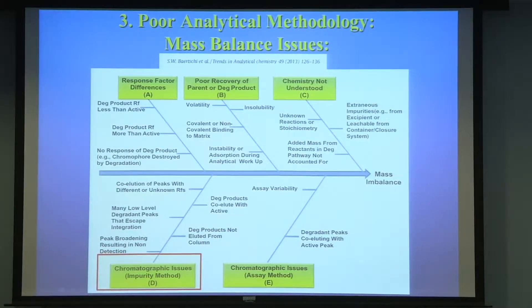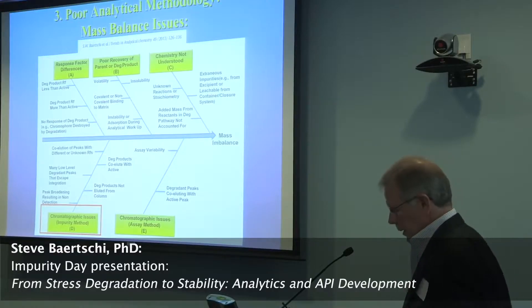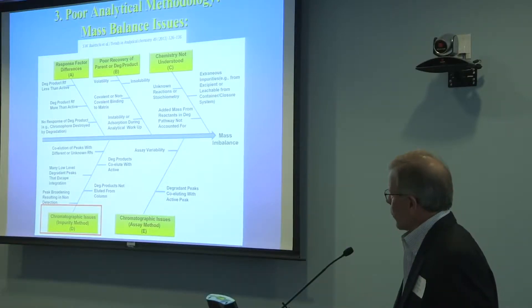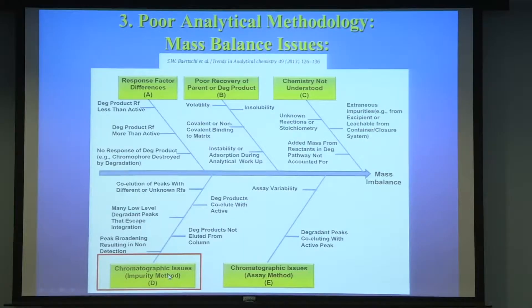In a paper published in Trends in Analytical Chemistry, with a focus on mass balance as the entire publication, the publication created this Fishbone or Ishikawa diagram describing the various factors that go into mass balance. We're going to talk about one of them: chromatographic issues, right here.